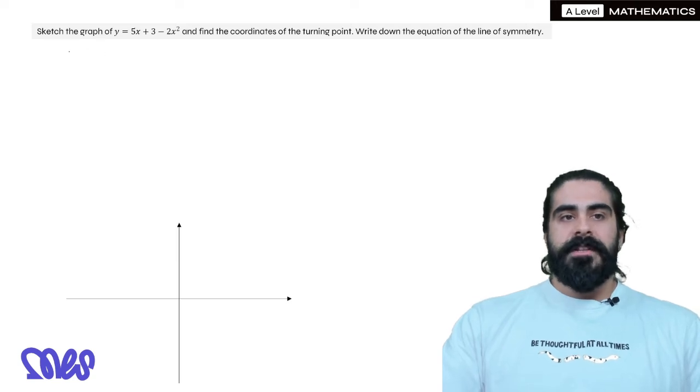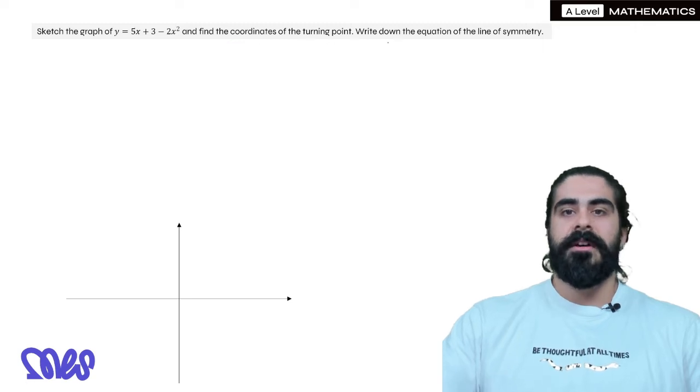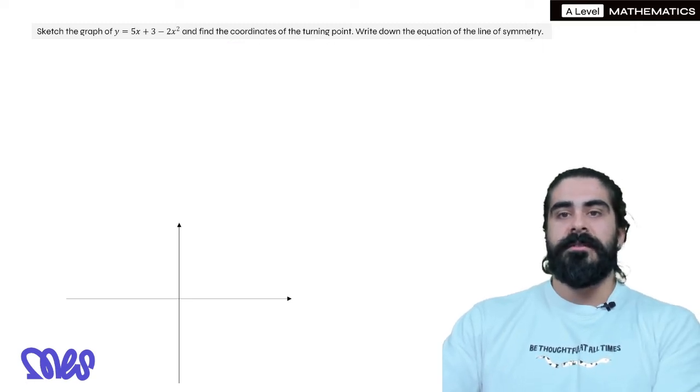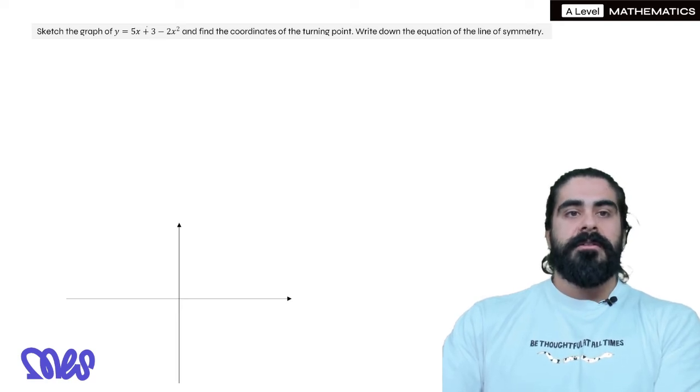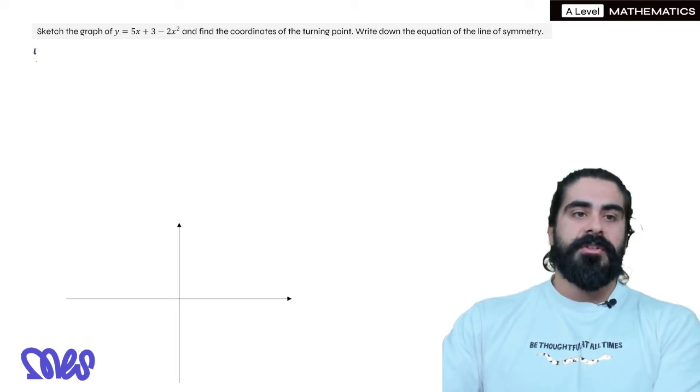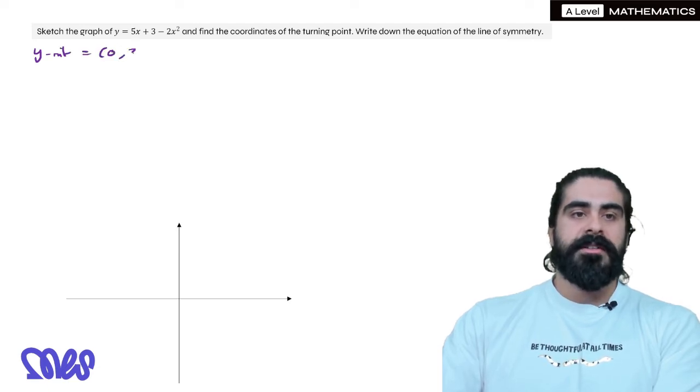A little bit more difficult: sketch the graph of y equals 5x plus 3 minus 2x squared, and find the coordinates of the turning point, write down the equation of the line of symmetry. So here, the number independent of x, which is the y-intercept, is 3. So across the y-axis at 0, 3.